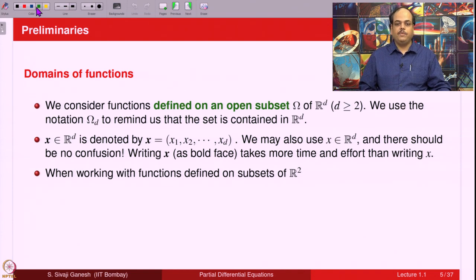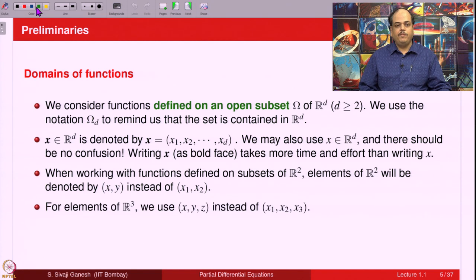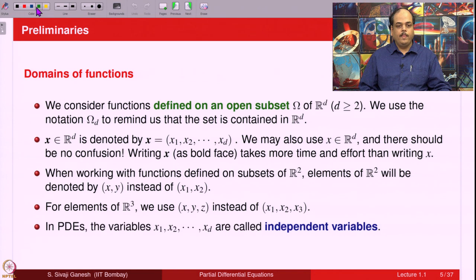When working with functions defined on a subset of R², elements of R² will be denoted by x, y — that is the standard practice — and we will not use x₁, x₂; we stick to the standard notation x, y. Similarly, when working with functions defined on R³, we use the notation x, y, z; that 3-tuple is denoted as x, y, z instead of x₁, x₂, x₃. In the context of PDEs, the variables x₁, x₂, ..., x_D are called independent variables.